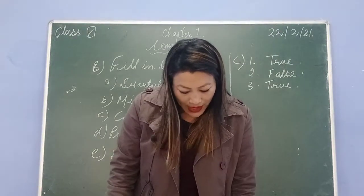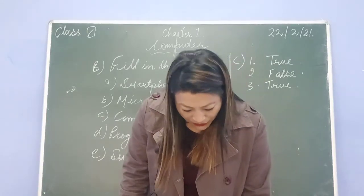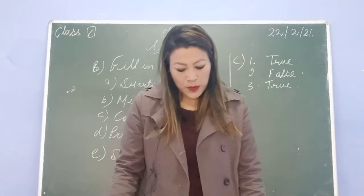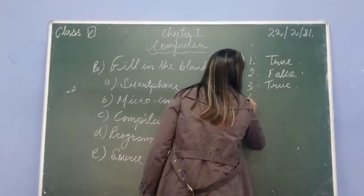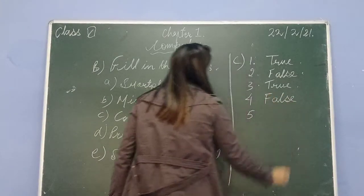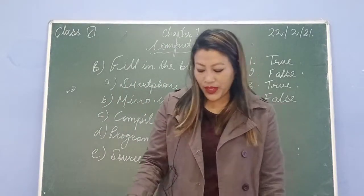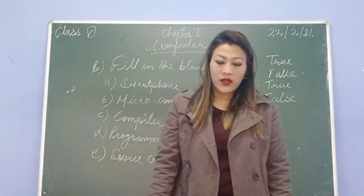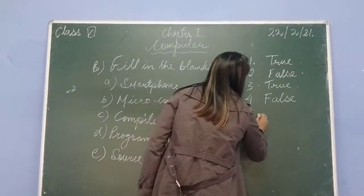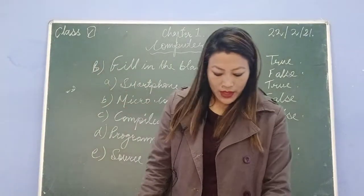Number four: microcomputers are inserted inside devices or electronic appliances to perform and control some specific task. No - microcomputers are not used to perform specific tasks in that way. This is false. Number five: a computer can understand English language. Computer understands only machine language - binary codes. So your answer will be false.